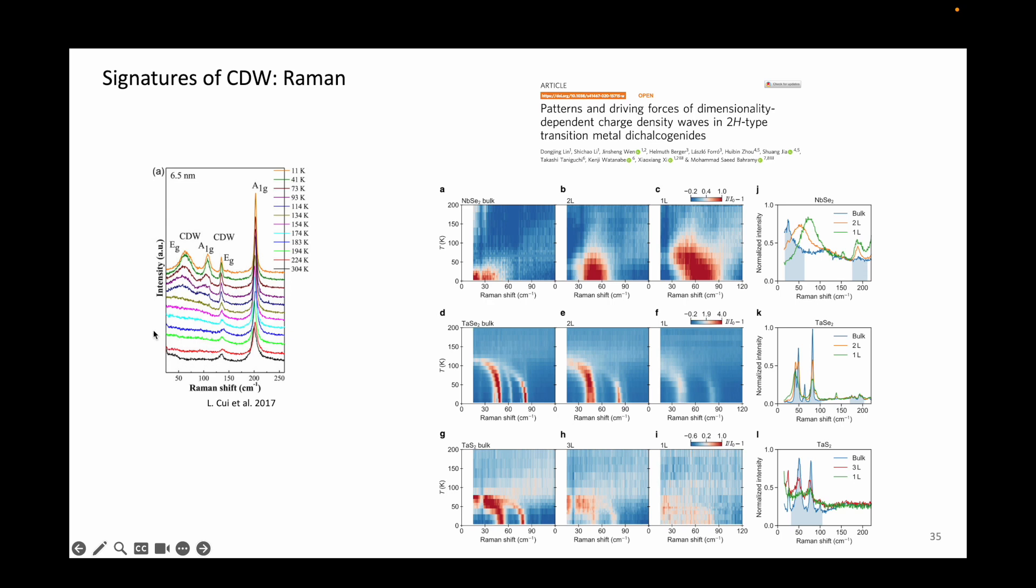On the right, the authors studied the charge density wave states in various crystals in their ultrathin limits. It is clearly visible from these color maps that at certain temperatures, certain peaks emerge, and these are again associated to the charge density waves in these materials.